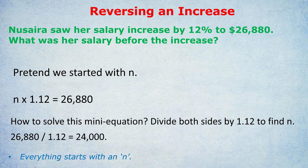It's really important to remember: you don't undo an increase by decreasing by that percentage. You reverse an increase by pretending the original amount is N, setting up the equation N times the multiplier equals the new amount, and then dividing both sides by the multiplier. That's how we solve it properly. So that's covered increasing by a percentage and reversing an increase.